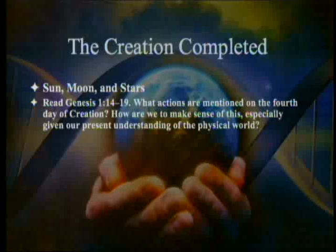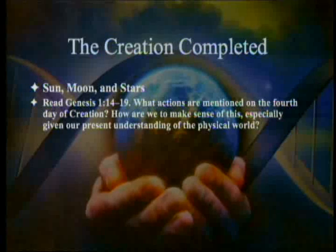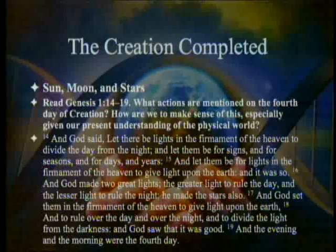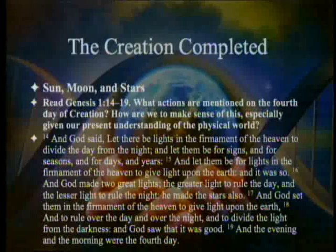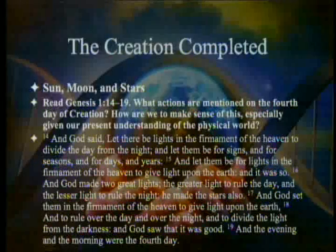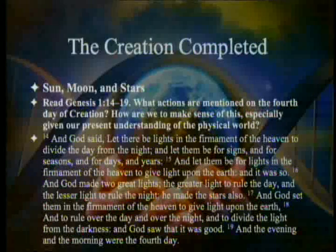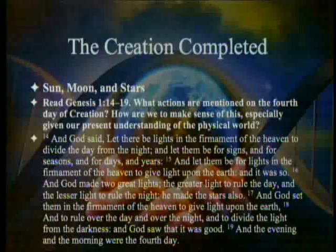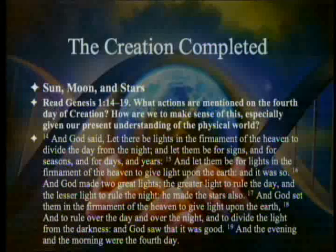Sunday's lesson is 'The Sun, Moon, and Stars.' Read Genesis 1:14–19. God said: 'Let there be lights in the firmament of the heaven to divide the day from the night, and let them be for signs and for seasons and for days and for years, and let them be for lights in the firmament of the heaven to give light upon the earth.' God made two great lights — the greater light to rule the day and the lesser light to rule the night. He made the stars also. And the evening and the morning were the fourth day.